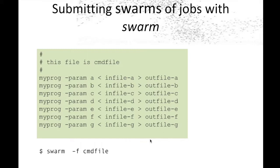This is what a Swarm command file looks like. It has a series of lines, each line corresponding to one command that you want run. This Swarm command file has a total of 7 lines and will create a swarm with 7 subjobs. You can also have comment lines which are ignored by the Swarm program. You submit it with swarm -f and the name of the Swarm command file.